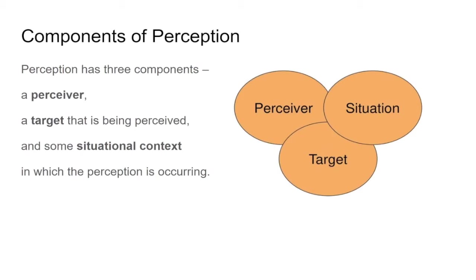When we think of perception, we really think of three components: the people who are perceiving — the perceiver — then what's being perceived, or the target, and finally the situation that the person finds themselves in. The situation is really critical because it's going to influence how they perceive the target.